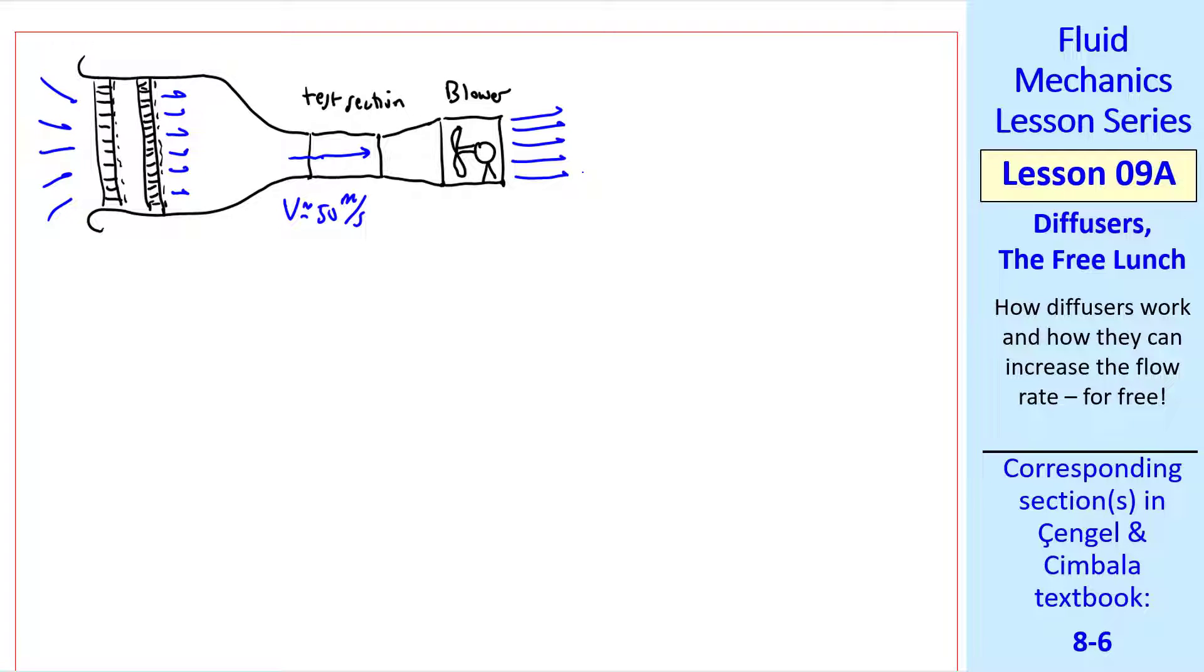Suppose I didn't know about diffusers and I let the flow just exit into the air. Well like the previous example with the Roman aqueduct or the draining tank, the pressure of this jet is P atmosphere. And the average speed at the exit is V exit. Well downstream this jet just dissipates. All of the kinetic energy of this jet is wasted. Eventually turning to heat heats up the room.